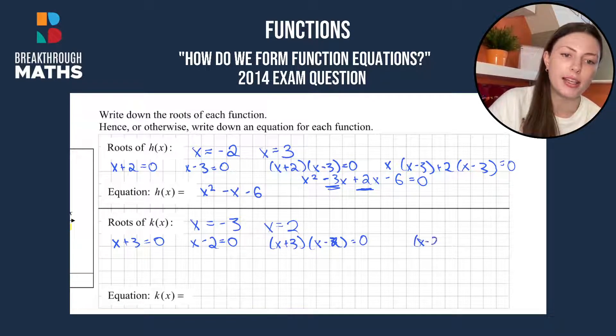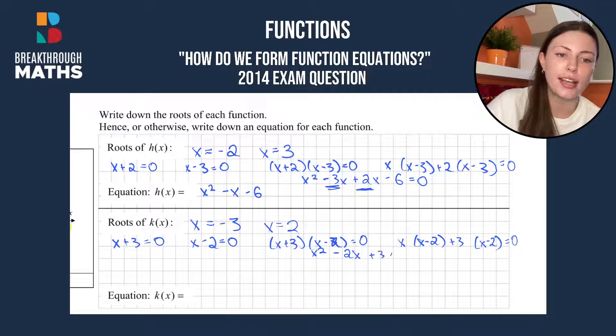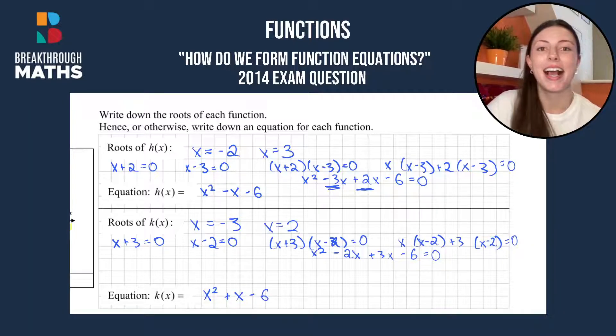We do our split and repeat, so x minus 2, x minus 2, and x plus 3 all equal to 0. We'll have x squared minus 2x plus 3x minus 6 equals 0. So that will give us x squared minus 2x plus 3x is plus x minus 6. And that's how you form function equations.